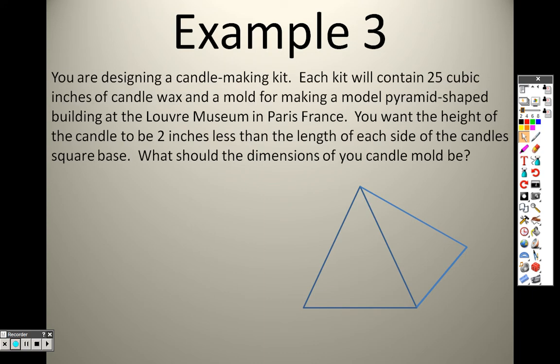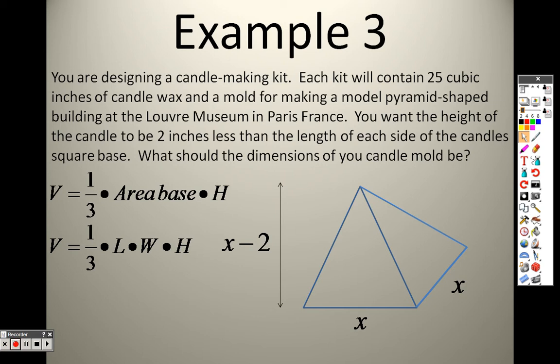So looking here at Example 3, it says you are designing a candle making kit. Each kit will contain 25 cubic inches of candle wax and a mold for making a model pyramid shape, building at the Le Vieux Museum in Paris, France. You want the weight of the candle to be 2 inches less than the length of each side of the candle's square base. What should the dimensions of the candle be? Well, it says that the base is going to be x, and the height is 2 less inches. So there it is. x times x times x minus 2 is the height. So you need to know the volume for a pyramid. So the formula for volume of a pyramid is 1 half times the area of the base times the height. So that means it's 1 third times length times width times height. Well, so it's 1 third times length, which is x, times width, which is x, times height, which is x minus 2. So I filled everything in. So I also know because it says that this cubic inch candle wax is 25 cubic inches. So that means v, the volume, is 25.